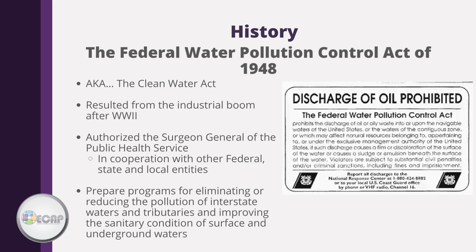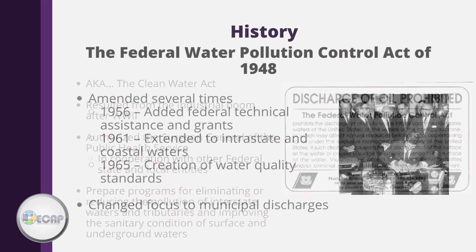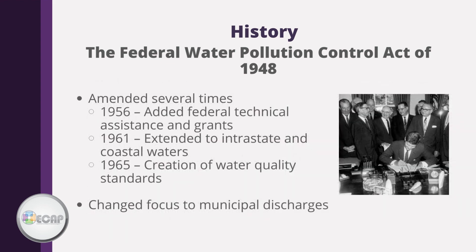The act required polluters to prepare comprehensive programs for eliminating or reducing the pollution of interstate waters and tributaries, and improving the sanitary condition of surface and underground waters. The Federal Water Pollution Control Act of 1948 has been amended several times. In 1956, amendments added federal technical assistance and grants. In 1961, amendments extended coverage to include intrastate and coastal waters. In 1965, amendments directed states to develop water quality standards, shifting the act's focus to municipal discharges.